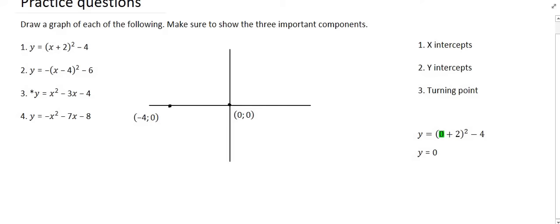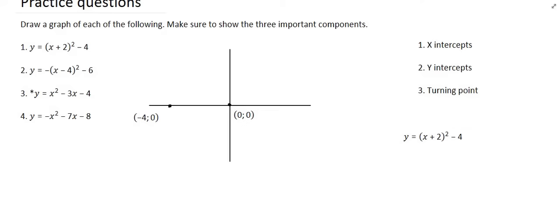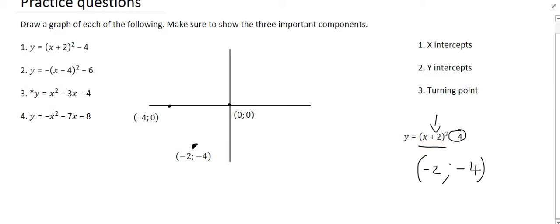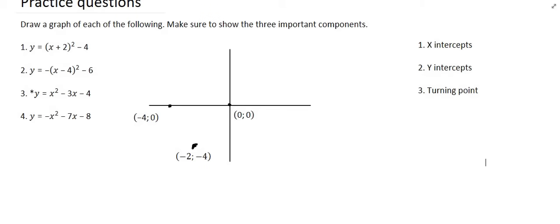The last part is to find the turning point. Remember there are three ways to locate the turning point: using the turning point form if given, or two other methods we'll encounter later. In this case they have given us the turning point form. Looking at the equation, the graph has shifted two units to the left — x plus two means two units to the left — and minus four means four units down. So the turning point is at (−2, −4). Notice that the x value of the turning point is right in the middle of the two x-intercepts, which is a feature of a parabola. All that is left is to draw the graph.